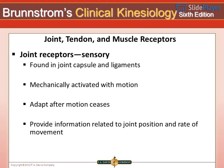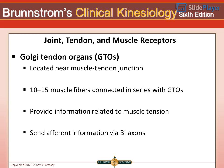Joint, Tendon, and Muscle Receptors — Joint Receptors: Joint receptors are sensory receptors found in the joint capsule and ligaments. They are mechanically activated with motion and adapt after motion ceases. They provide information related to joint position and rate of movement. Golgi Tendon Organs (GTOs) are located near the muscle-tendon junction, with 10 to 15 muscle fibers connected in series with GTOs. They provide information related to muscle tension and send afferent information via Ib axons.